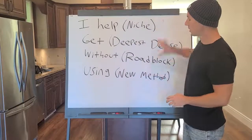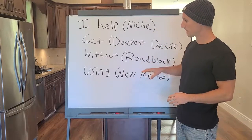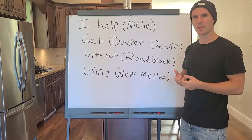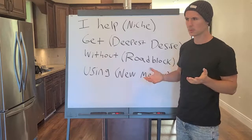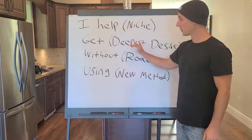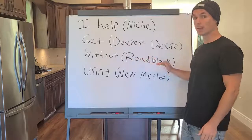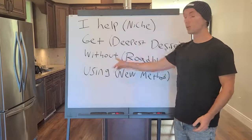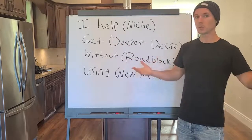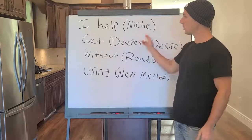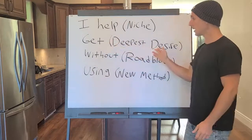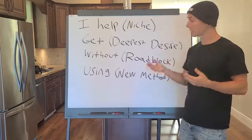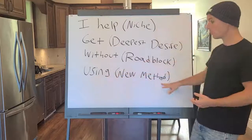Here's another thing to think about: when people read your RMS and see the 'without' part, it should almost seem impossible. Richard said 'win tournaments without extra course practice' — how is that possible? I say 'create profitable online courses without needing a huge following' — how is that possible? Eva says 'get their dog on a plant-based diet without high costs' — how is that possible?